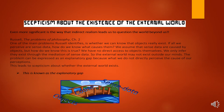I've lifted this from Lacewing. It is showing that we can make our scepticism even more global, in the sense that indirect realism makes us question whether there is any external world beyond us and our minds. He points to Russell's Problems of Philosophy and says that one of the main problems Russell identifies is whether we can know that objects really exist at all. If all we perceive are sense data, then how do we know what causes them? We assume that sense data are caused by direct objects, but how do we know this is true? We no longer have any direct access to objects themselves within indirect realism, so we only infer that they exist through the mediation of sense data.